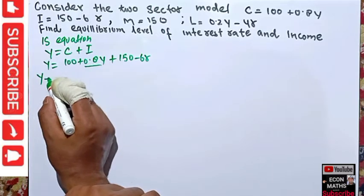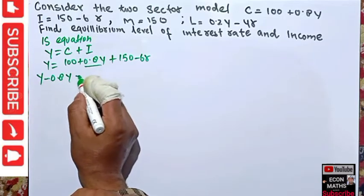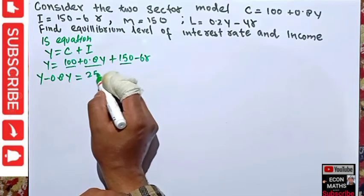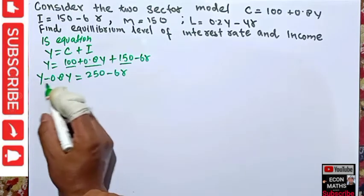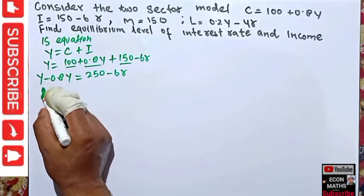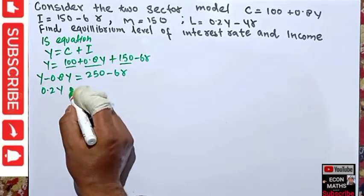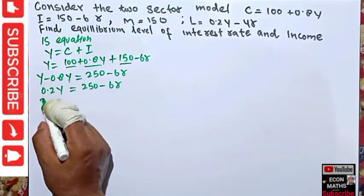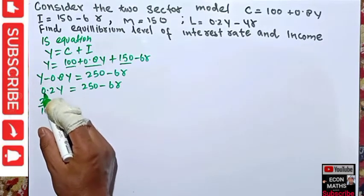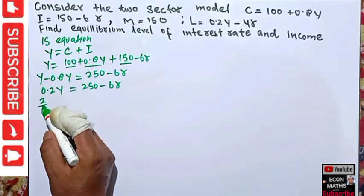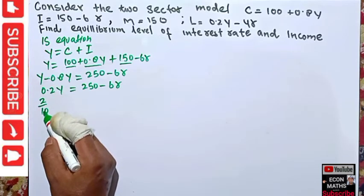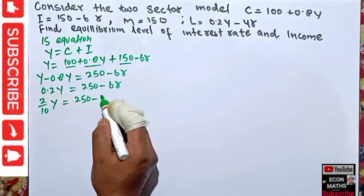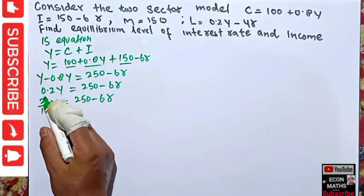Transposing 0.8Y to the left-hand side, it becomes negative 0.8Y. The constants 100 and 150 add up to 250, giving us Y - 0.8Y = 250 - 6R. So 0.2Y = 250 - 6R. We can write 0.2 as the fraction 2/10, which simplifies to 1/5.